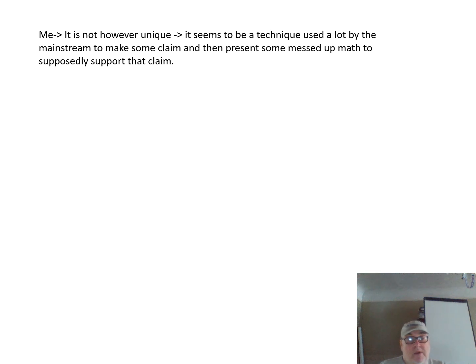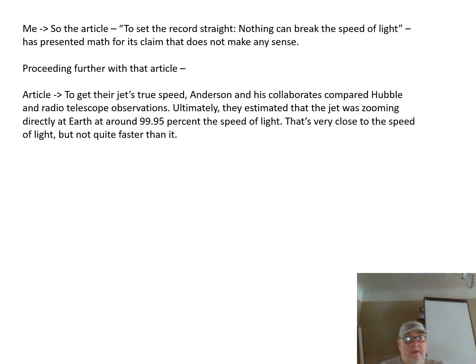Naturally, I could make a guess as to what correction would be needed, but I see several options of correcting. There were several lowercase d, and one or more of those lowercase d might need to be made the uppercase D. So the article is a mess. It presents a mess. It is not, however, unique. It seems to be a technique used a lot by the mainstream to make some claim and then present some messed up maths to supposedly support that claim. The article has presented a mess and made a claim.